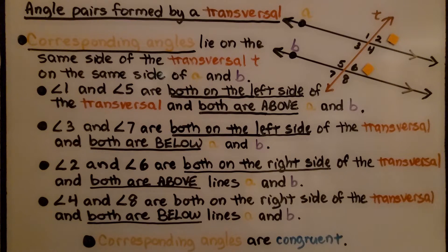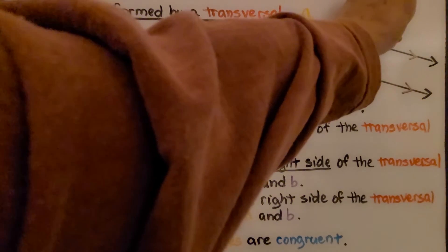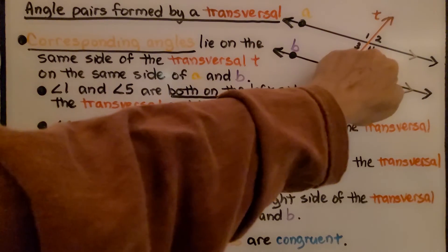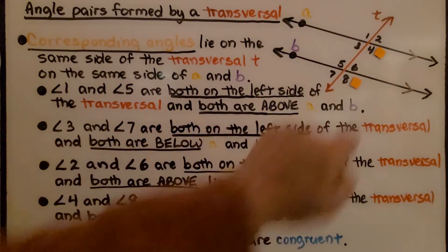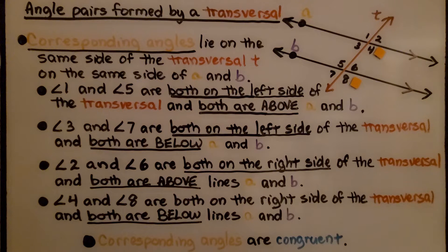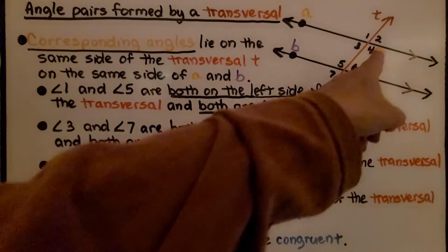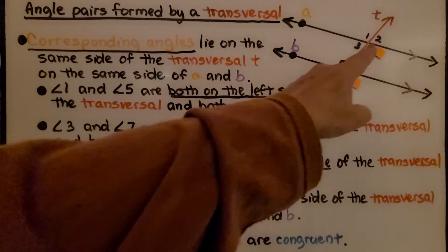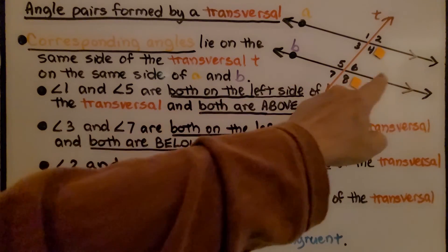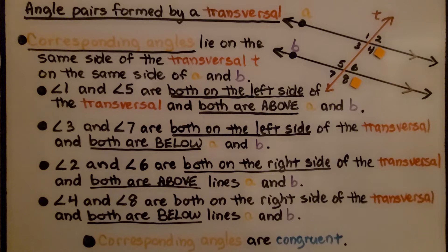Then we have angle 4 and angle 8 — one is an interior angle on the right side and one is an exterior angle on the right side. They are both on the right side of the transversal and both are below lines A and B. Corresponding angles are congruent — if you measured angle 4, it would be the same as angle 8.